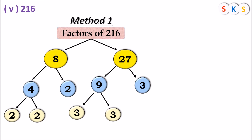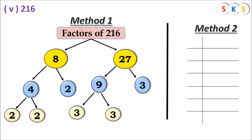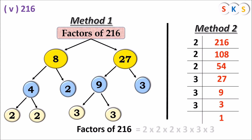Method 2 for 216: Divide by prime numbers. 216 ÷ 2 = 108. 108 ÷ 2 = 54. 54 ÷ 2 = 27. 27 is not divisible by 2, so divide by 3: 27 ÷ 3 = 9. 9 ÷ 3 = 3. 3 ÷ 3 = 1. So the prime factors of 216 = 2 × 2 × 2 × 3 × 3 × 3.